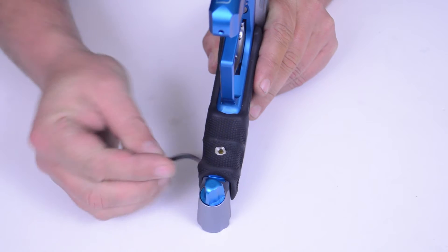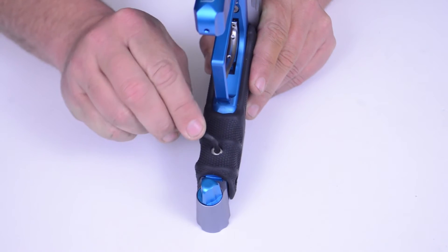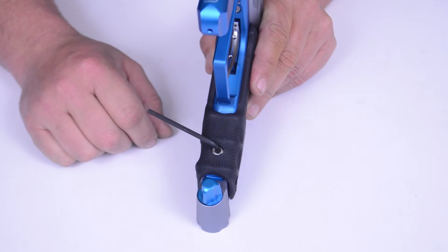Using your included 1-8th hex key, locate the velocity adjustment screw here, recessed on the front of the trigger.